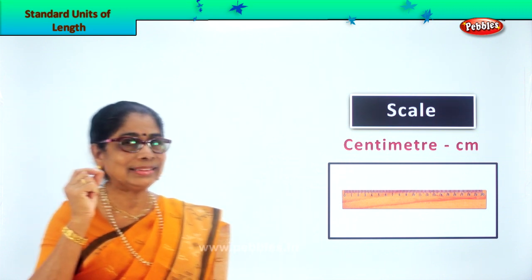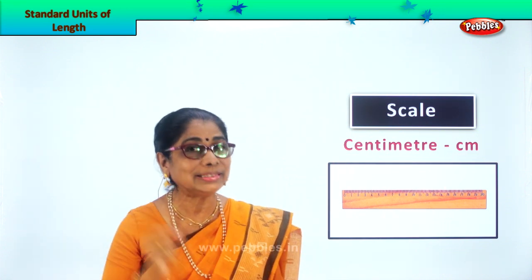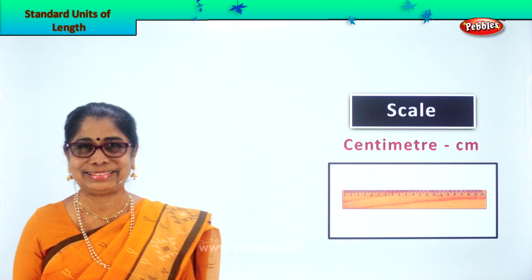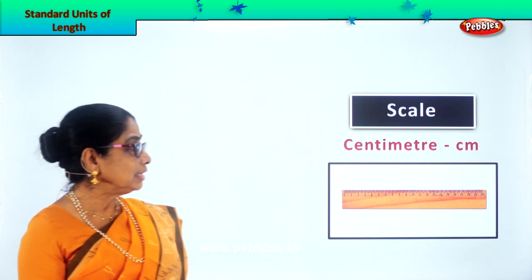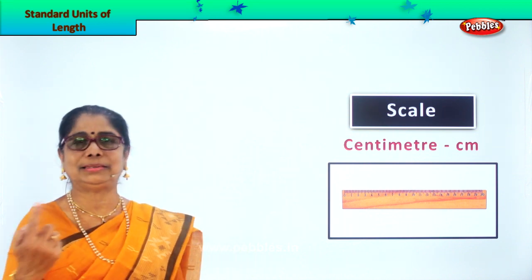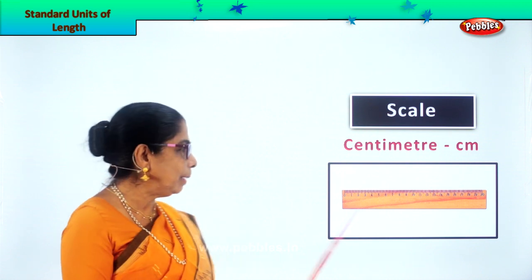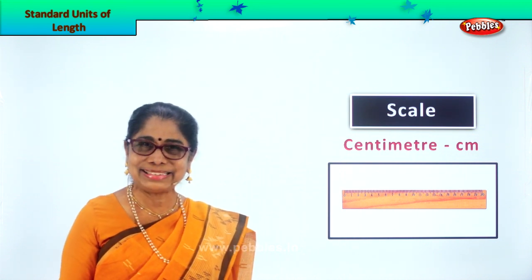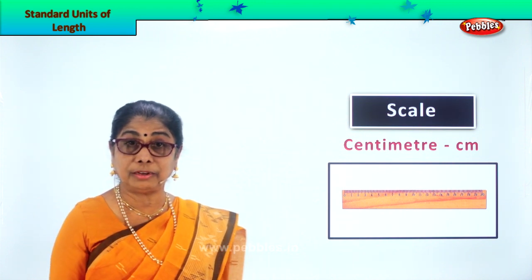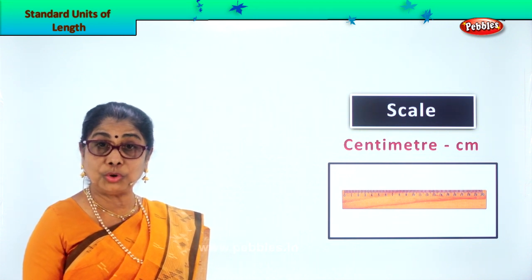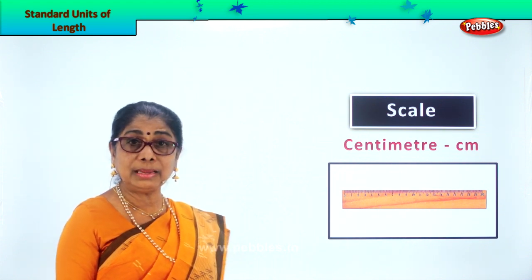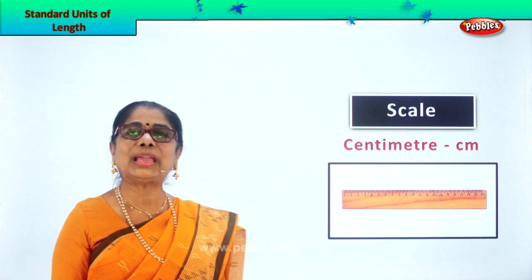So cm, centimetre — short form, you must remember. Anything small you want to measure, measure in centimetres. Supposing you have a tiny nut — any nut, even a monkey nut — you can measure it in centimetres. Your rupee note — you can find out the breadth or the length of the rupee note. A 5 rupee, 10, or 20 rupee note — what's the length? It is 12 centimetres or 10 centimetres. You can measure anything.